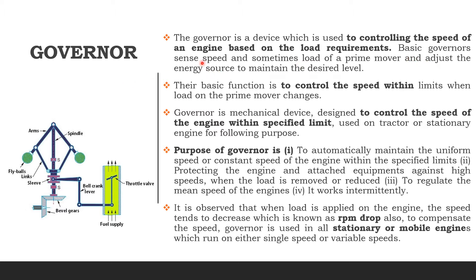The basic governor senses the speed — its job is to only sense and control the speed. Sometimes it adjusts the energy source of the prime mover to maintain the desired level. Its basic function is to sense the engine's speed and decrease or increase it according to load, as per load.